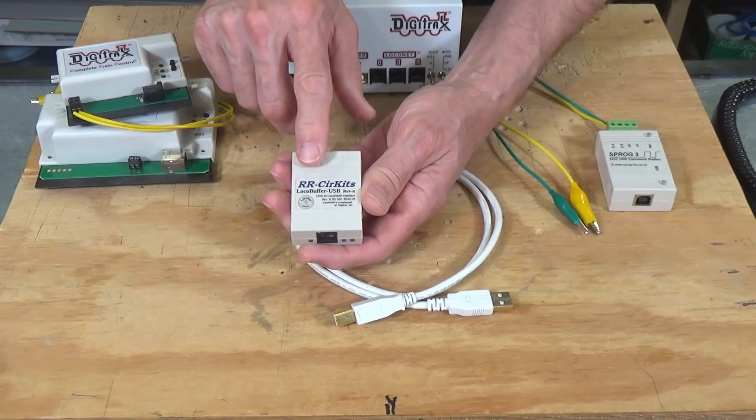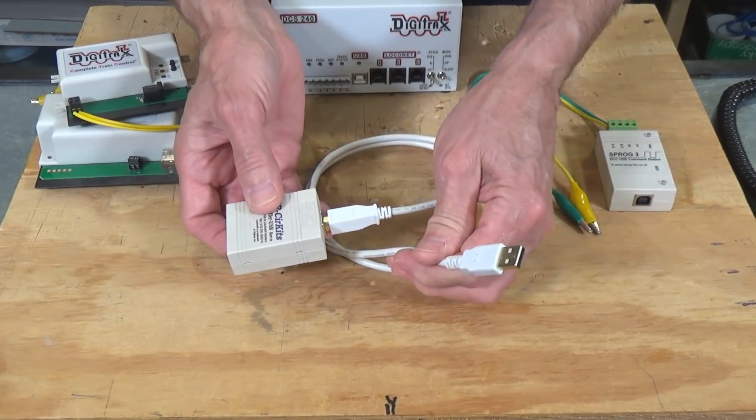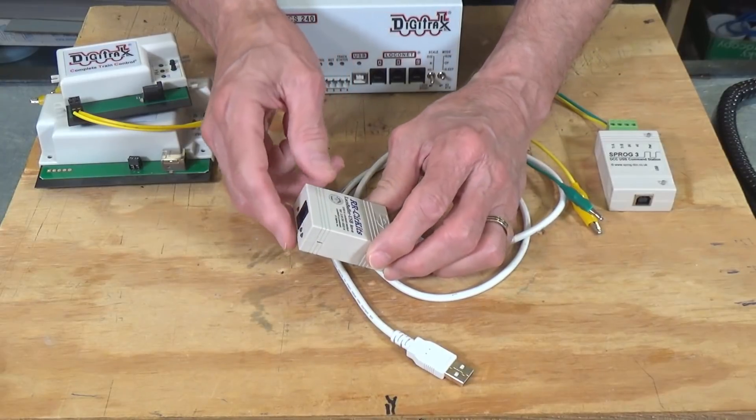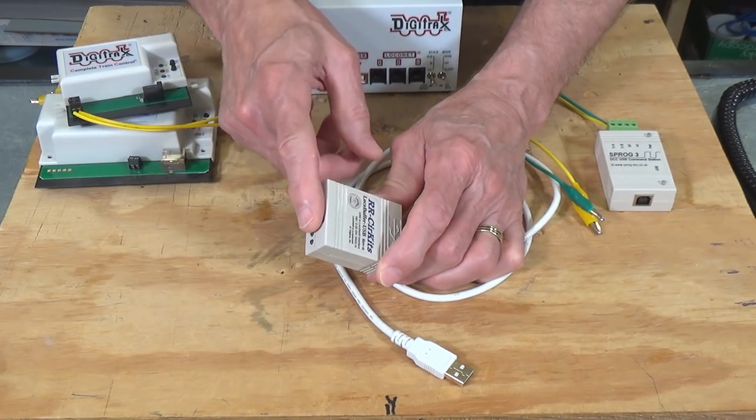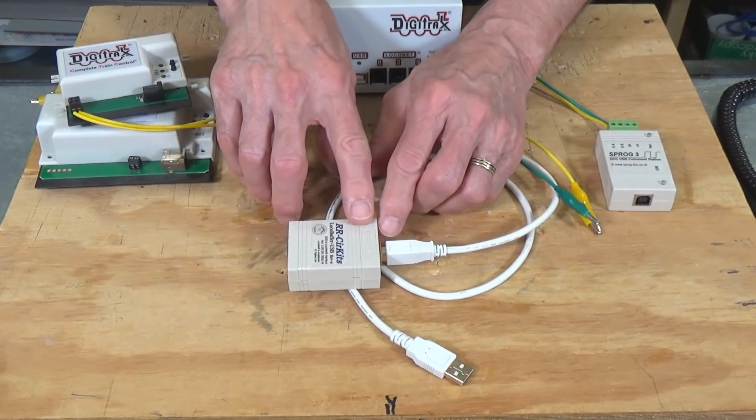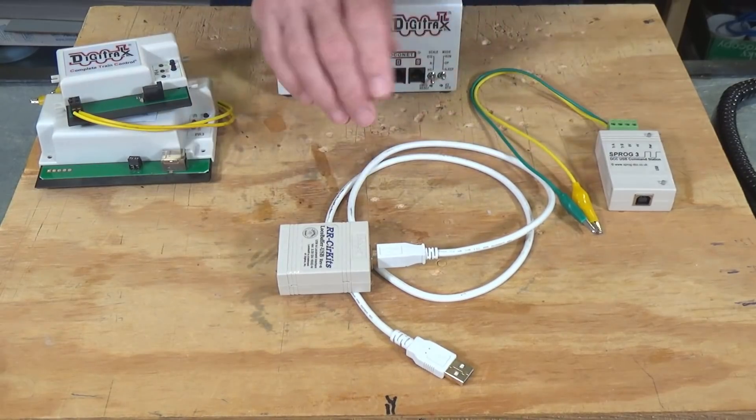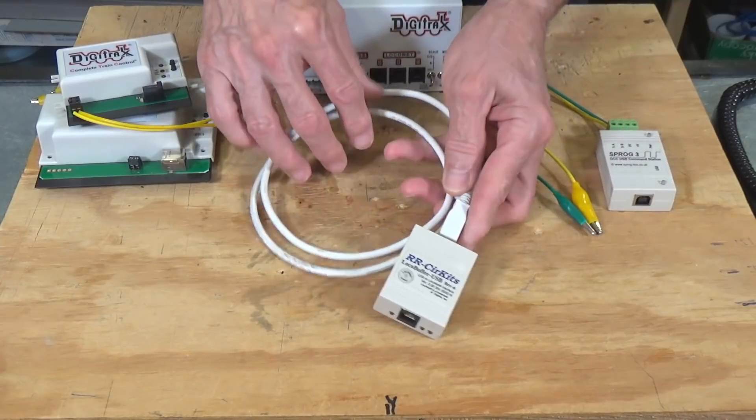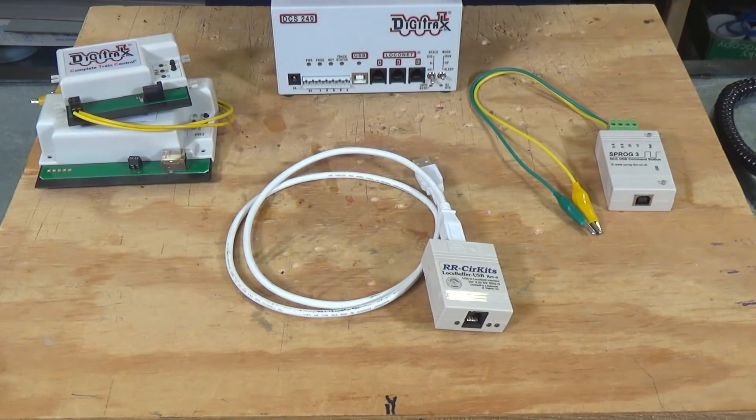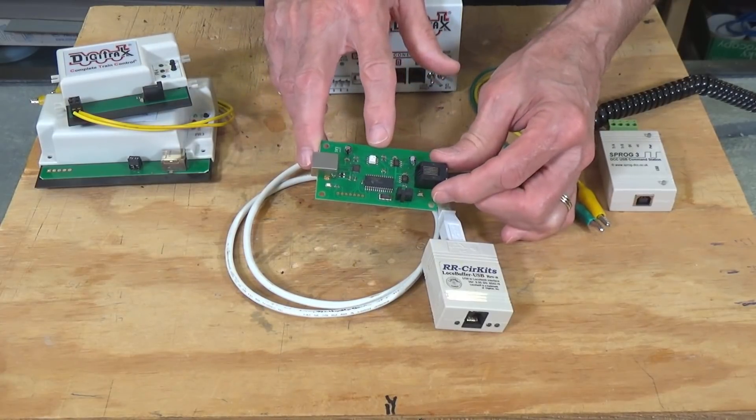Another very popular interface is the Railroad or RR-Circuits LocoBuffer USB interface. You just plug one end here into your computer using your USB cable. And then the other end goes into a LocoNet. So these are Digitrax type LocoNet devices. And once it's plugged in, it takes power from either the USB end or the LocoNet end. And it basically then translates the information from your LocoNet system into your computer. And it can only be used for that purpose. So I call it a dumb interface because it can't be used as a standalone programmer.